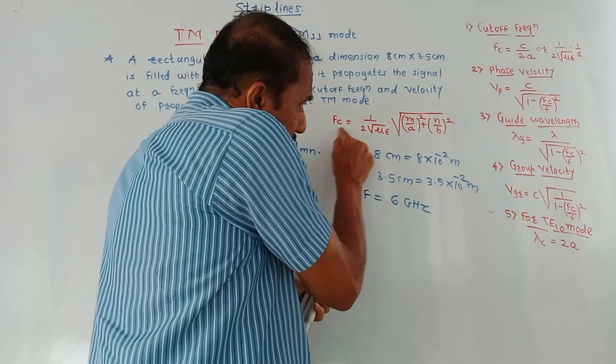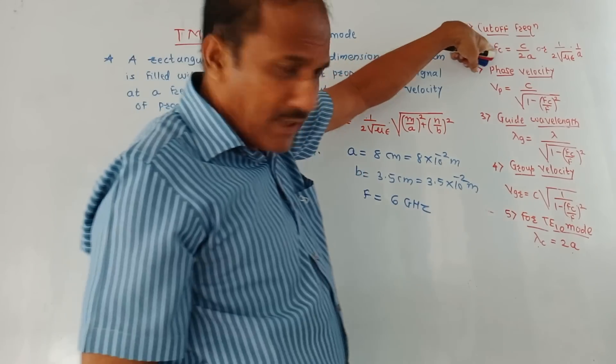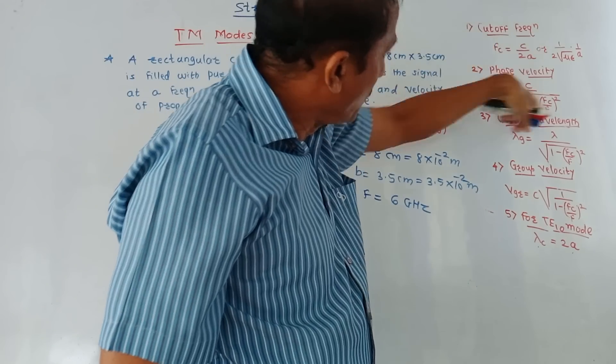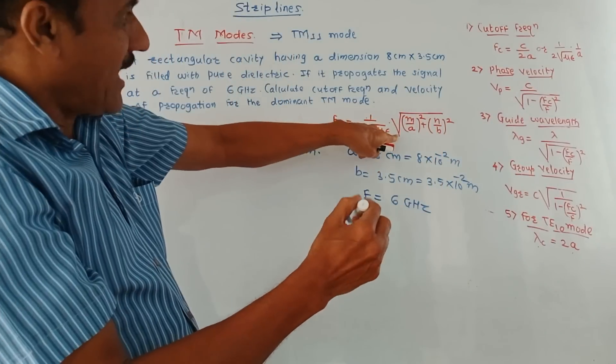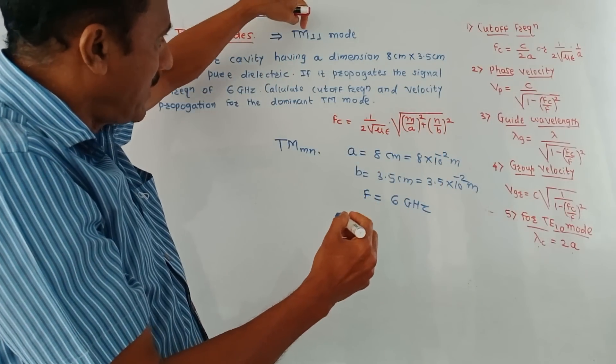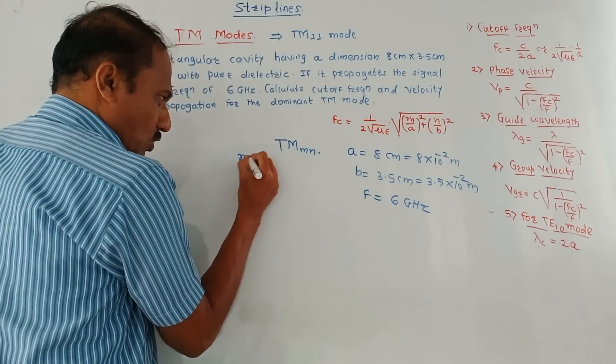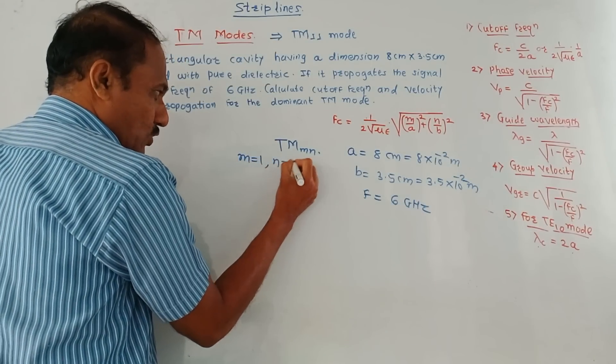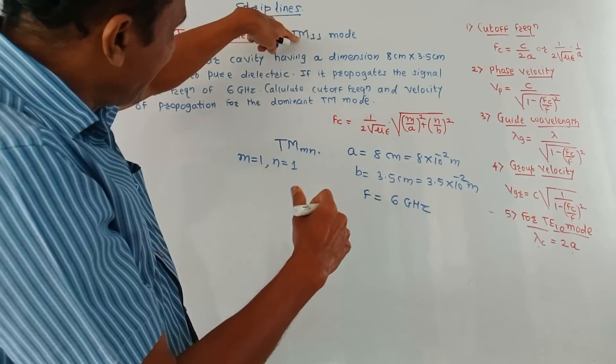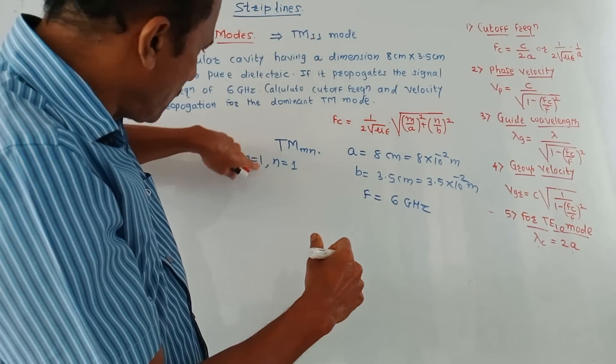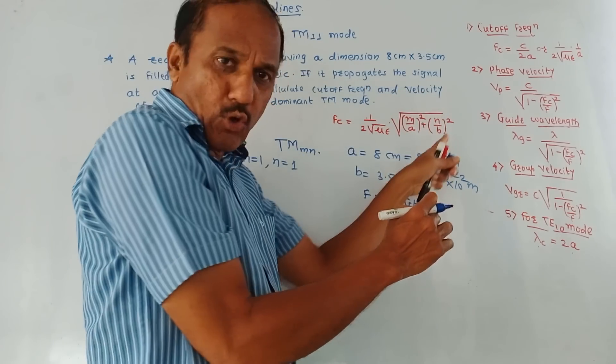Calculate cutoff frequency, that is FC, and velocity of propagation for the dominant TM mode. Now, this is the formula to calculate the cutoff frequency. In case of TE dominant mode, we used this formula. It is one and the same. Only thing is that here I have to put the value of dominant mode. That means I would put M equals 1 and N equals 1. As I mentioned, the notation is TM MN. Dominant mode is TM11 mode. So small m is 1, small n is 1. So in this equation, let us put all these values.